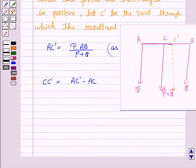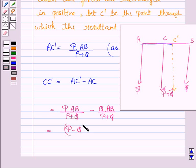Now AC dash is P into AB upon P plus Q and AC is Q into AB upon P plus Q. So this becomes taking AB upon P plus Q common, we get P minus Q into AB upon P plus Q.